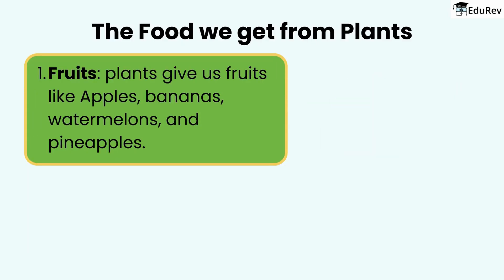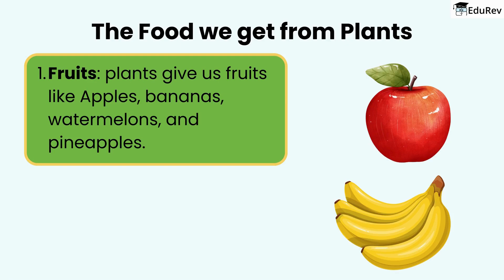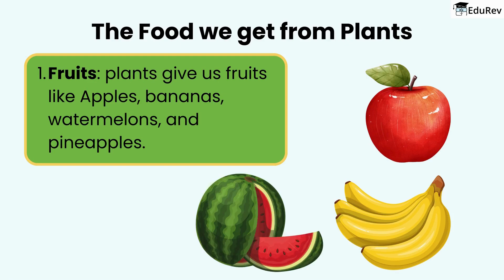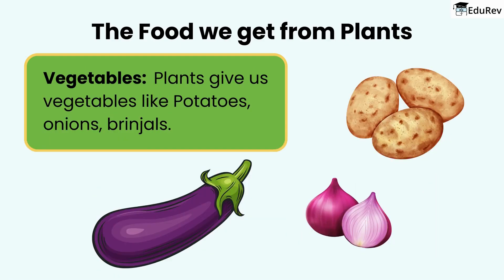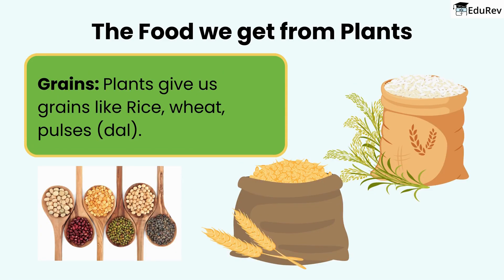Now, let's talk about the food we get from plants. Plants give us fruits like apples, bananas, watermelons, and pineapples. Plants also give us vegetables like potatoes, onions, and brinjals. Plants give us grains like rice, wheat, and pulses — dal.